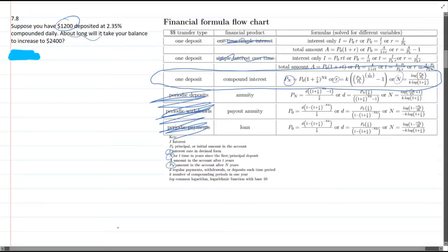First thing I'm going to do is write the formula: n equals log of P_n over P_0 divided by k log of one plus r over k.